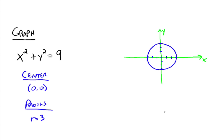There's the graph of this equation — every single one of these points on here would make this equation true. Notice that we made it nice and smooth, like a circle. We do not connect the dots in a jagged way — that's not a circle, so don't do that.